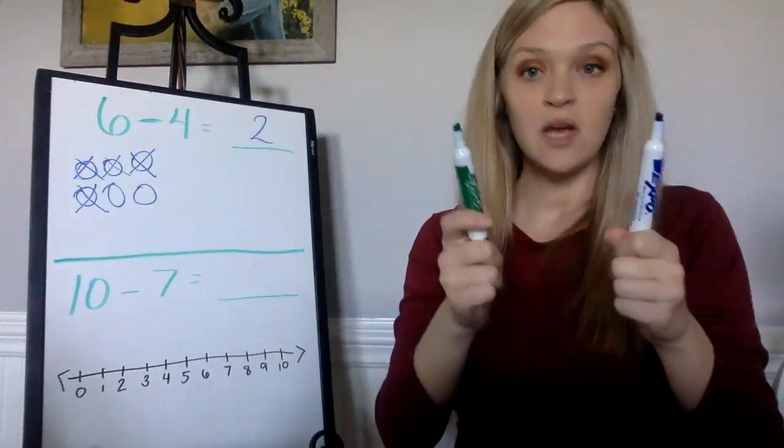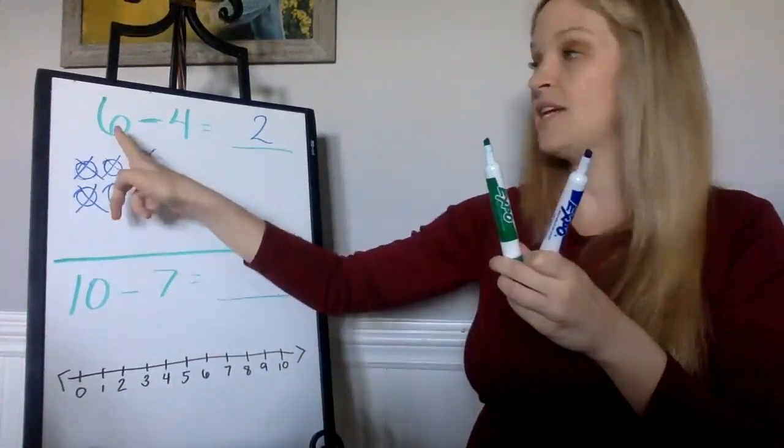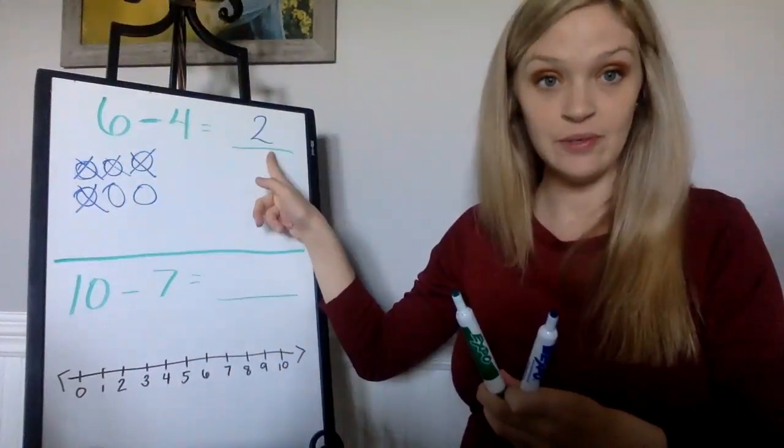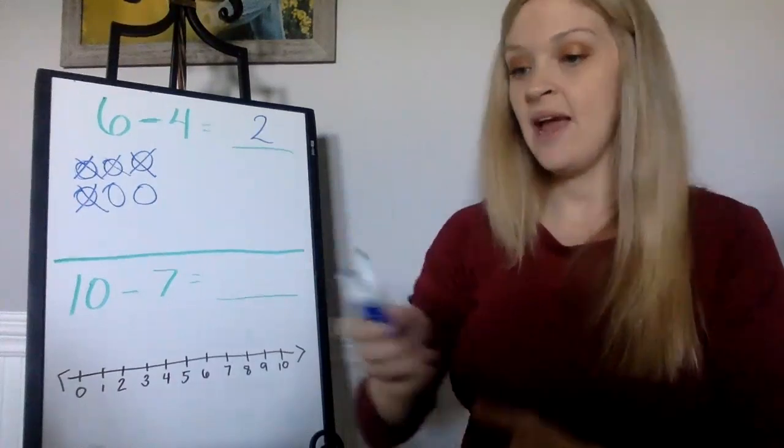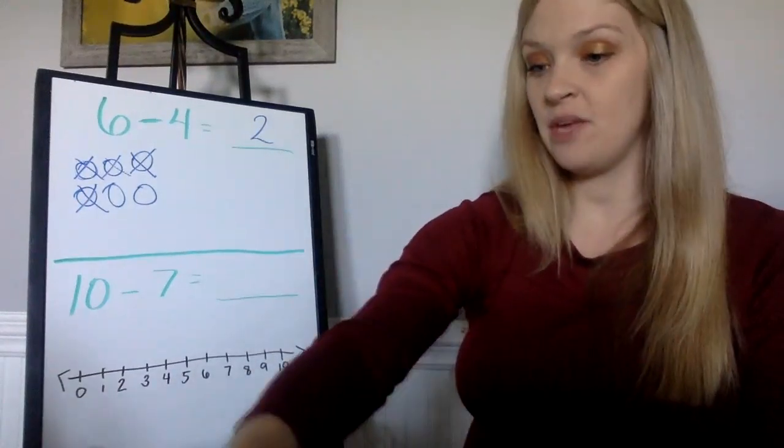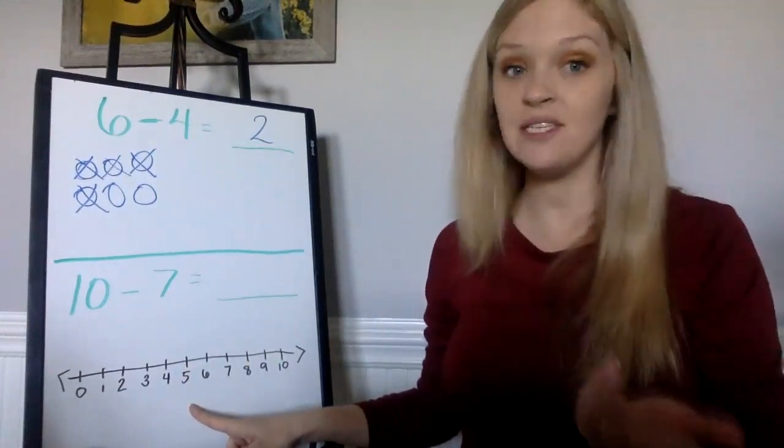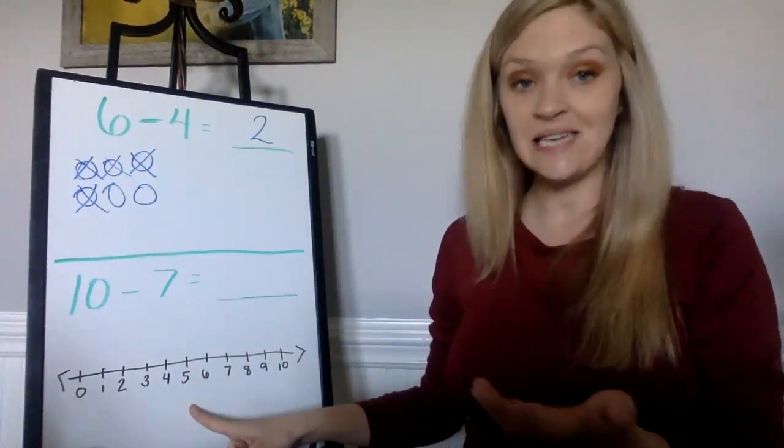So once again, we know that six minus four equals two. Now another strategy that we can use is using our tens frame, just like we did with addition, but this time we're going to be going backwards since we have our minus.